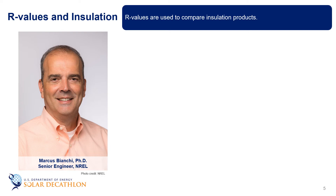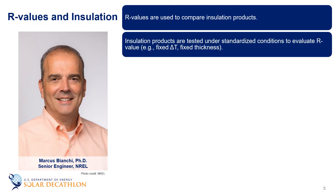R-value is defined very specifically when you put a product between two different temperatures. Those two temperatures are fixed and always the same — you cannot compare products tested at different temperatures because the mechanisms change. You place the insulation between two plates, one at a hot temperature and one at a cold temperature — traditionally 100 degrees Fahrenheit and 50 degrees Fahrenheit. You let it sit for a number of hours and then measure the heat flux between the two plates. Since you know the two temperatures and the heat flux, you can calculate the R-value.